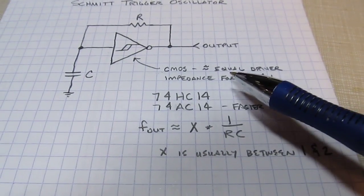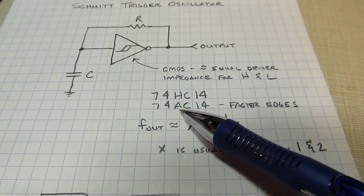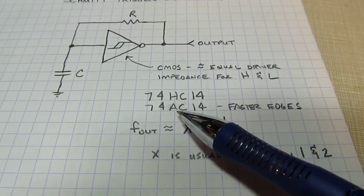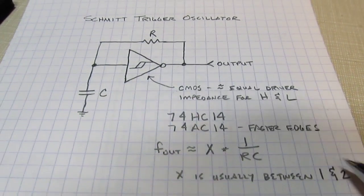An HC is a high-speed CMOS, is a little bit faster. The AC is faster yet, has a pretty fast edge speed. It's about two nanoseconds or so. So those are common devices to use for this oscillator.